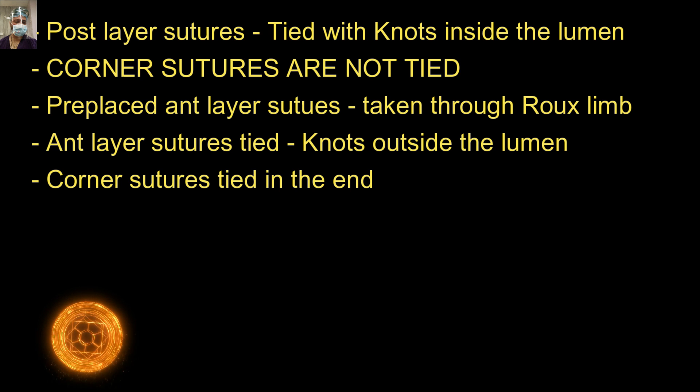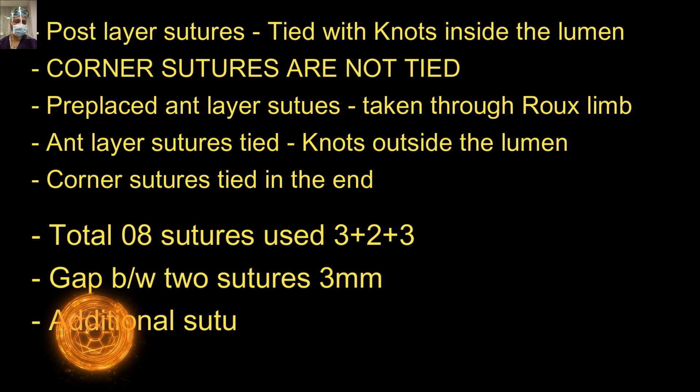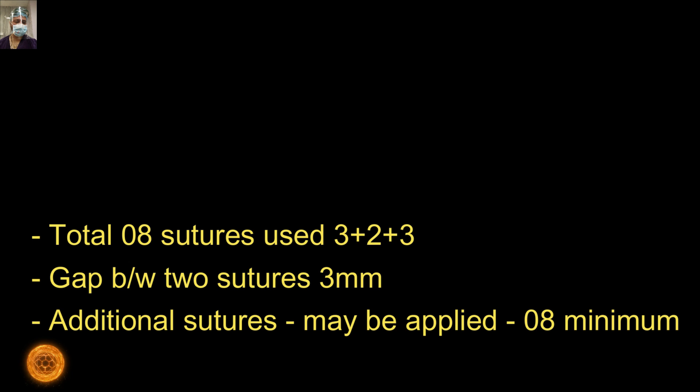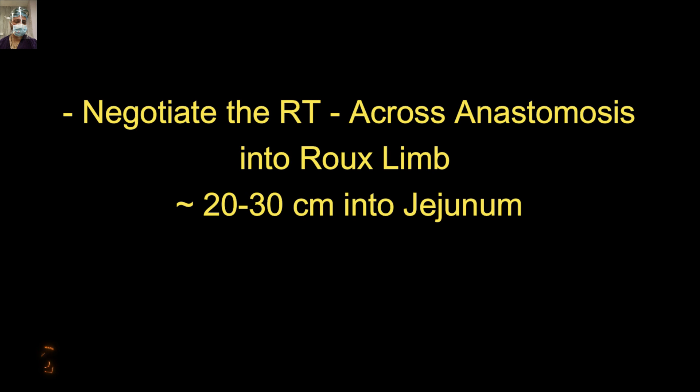Now the pre-placed anterior layer sutures are taken and the corner sutures are left as such because we have already taken them through the esophagus and jejunum. These three sutures are taken and at the end we tie the knots. We tie the posterior knots first, then we take the anterior layer sutures, tie these knots, and then tie the corner sutures. Please remember to negotiate the Ryle's tube across the anastomosis before taking the anterior layer sutures. The Ryle's tube is negotiated roughly about 20 to 30 centimeters into the jejunal limb. If you are not adding feeding jejunostomy, it's more important that we negotiate it properly. Always negotiate the Ryle's tube into the Roux limb before taking the anterior layer suture, otherwise you will face difficulty.